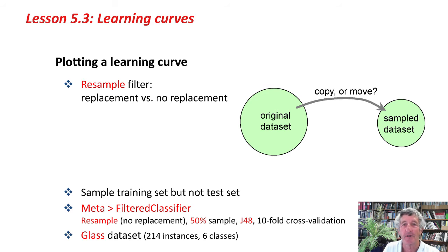Without replacement means you kind of move it, so you can't see it again. You can't sample it twice. If you sample with replacement, then instances might occur more than once in the sampled data set. If you sample without replacement, then they can't. That's the first thing.